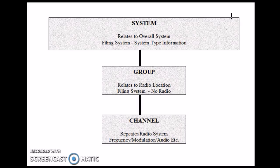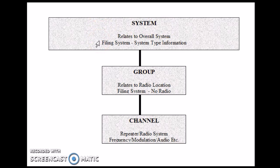Here's a block diagram that represents the programming tree for the 996P2 scanner when working with conventional channels. It's got three blocks: the system block, group block, and the channel block. You have to input information in all three of these areas to make the scanner function correctly. The system block is pretty much a filing system — it lets the operator and the scanner determine where the system is at, and it stores the system type information, such as whether the system is going to be conventional, trunking, or whatever.